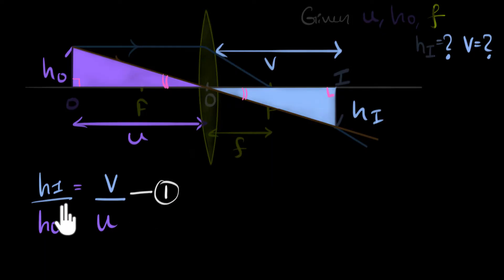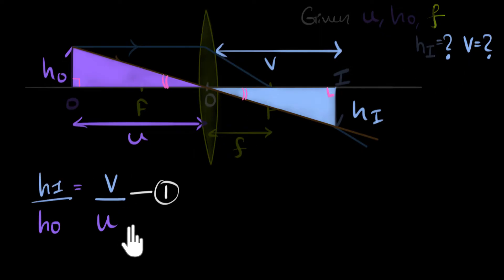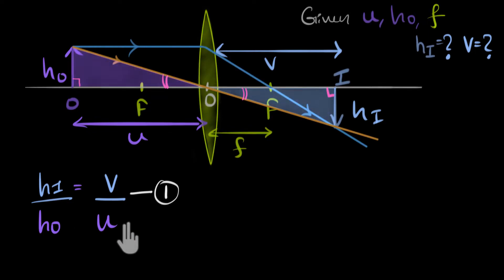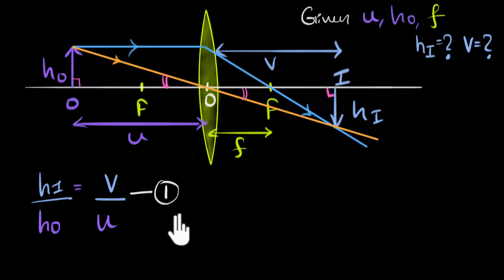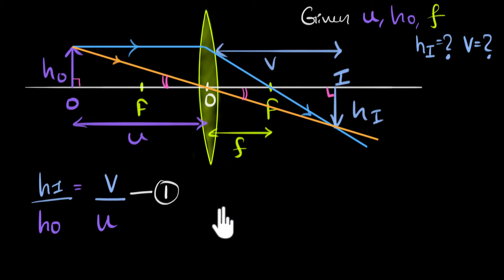This one equation contains both unknowns — we don't know HI and we don't know V — so we can't find our answer yet. We need another equation, so we have to find another set of similar triangles. Try to find one which has F in it as a side length.